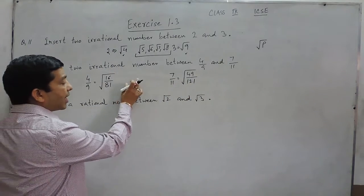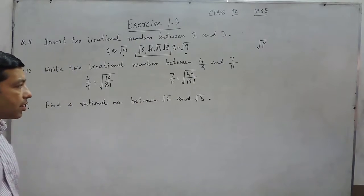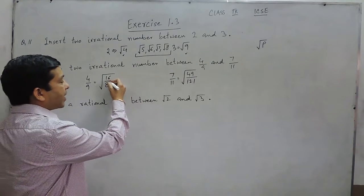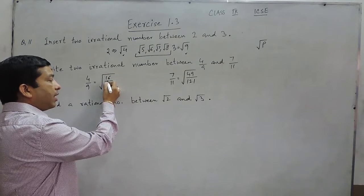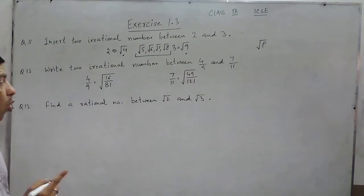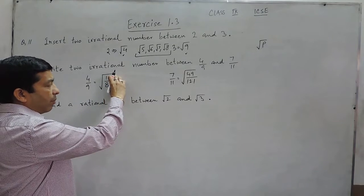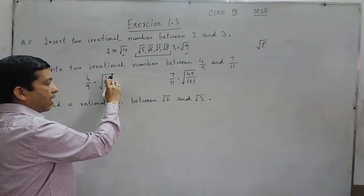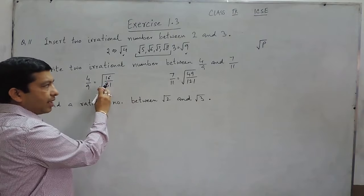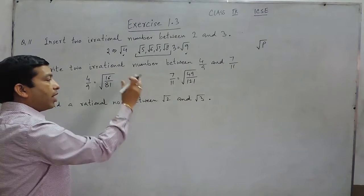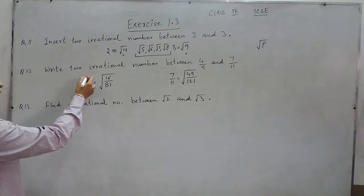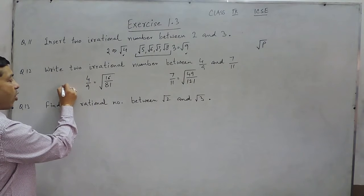But if we look at the irrational numbers between these numbers, so it is quite easy because if the denominator is more, then the number will be less. If the denominator is less, then the number will be more.